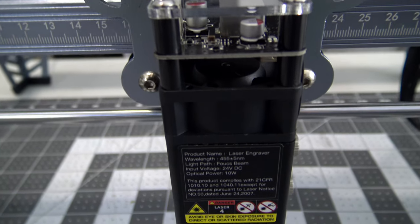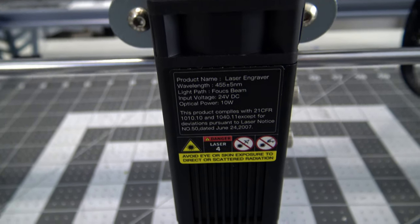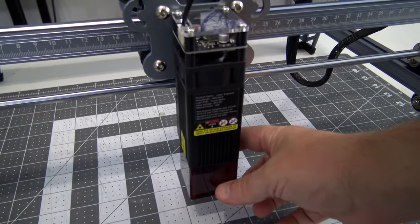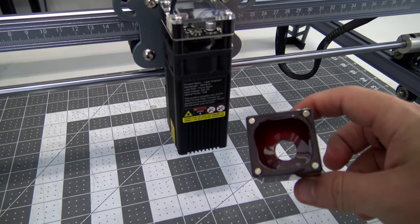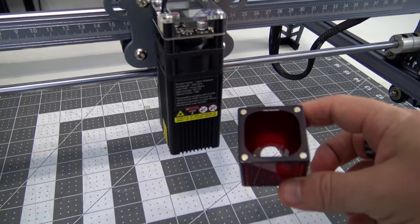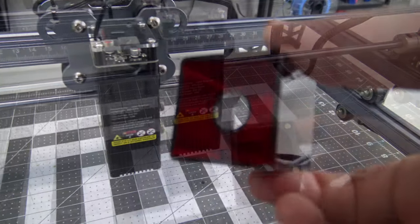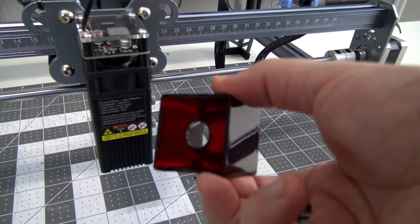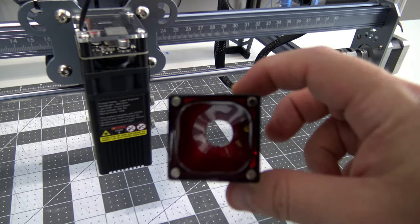An internal fan blows air down through the module, acting to both cool the diodes and blow away smoke from the lens. The protective cover is magnetically attached to the laser module which makes it very easy to remove to clean the cover or the lens. The inside of the cover is funnel shaped which forces the air from the fan to speed up and prevents soot from being able to collect on the lens.